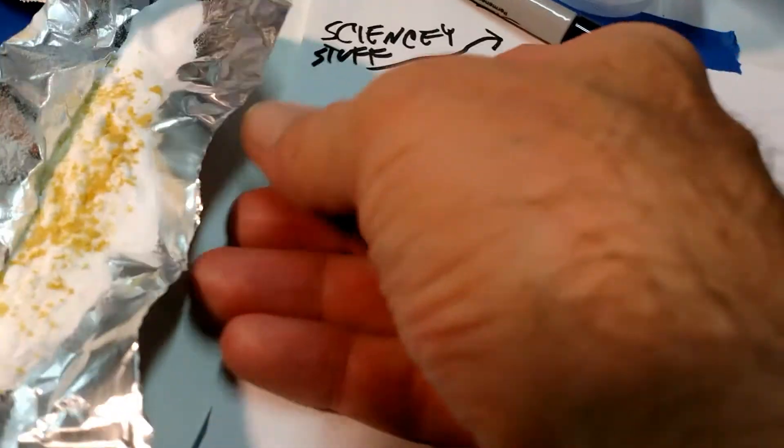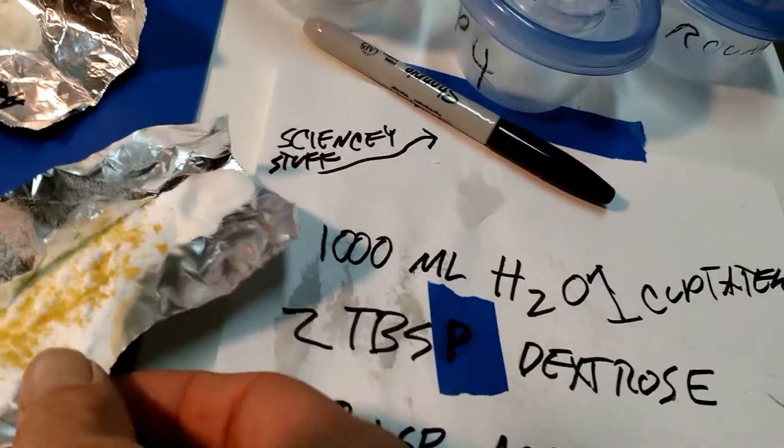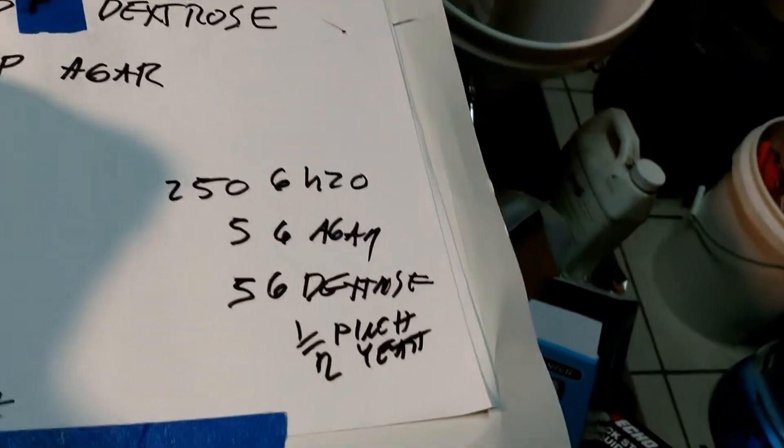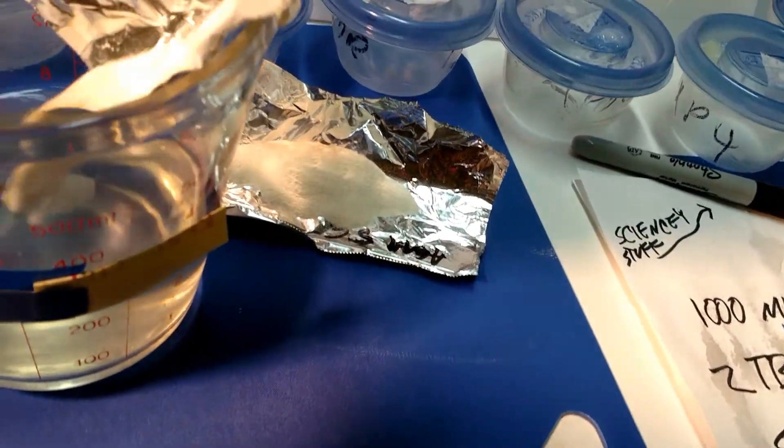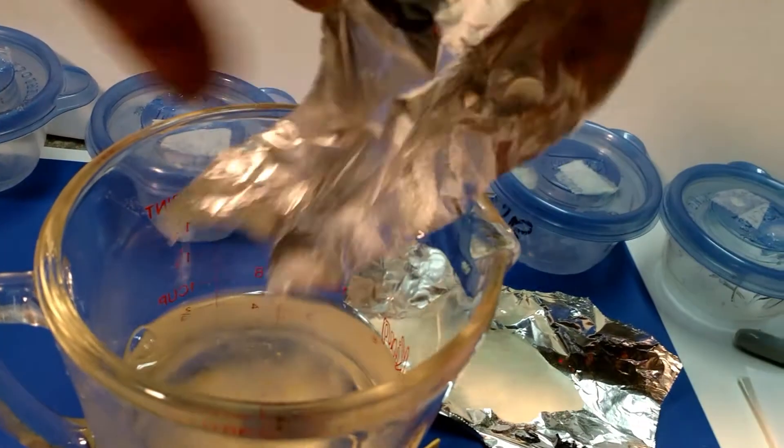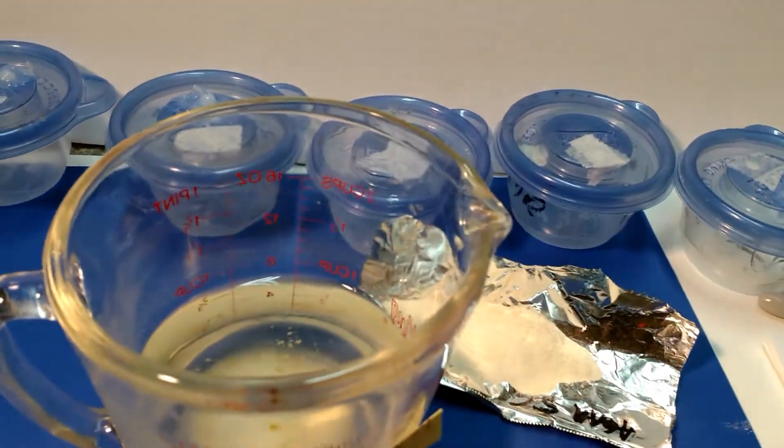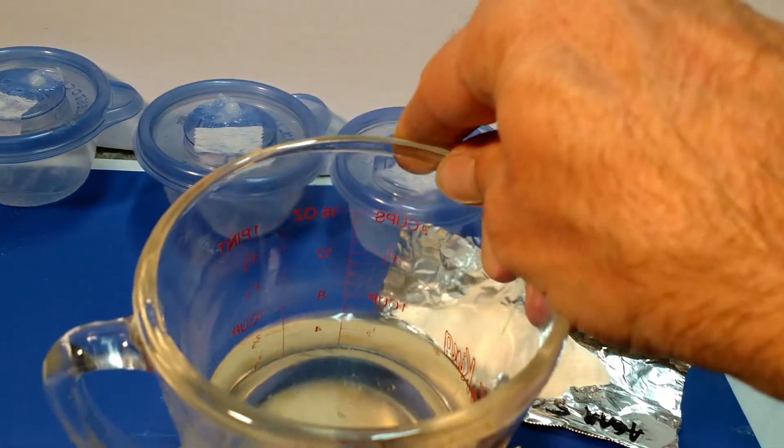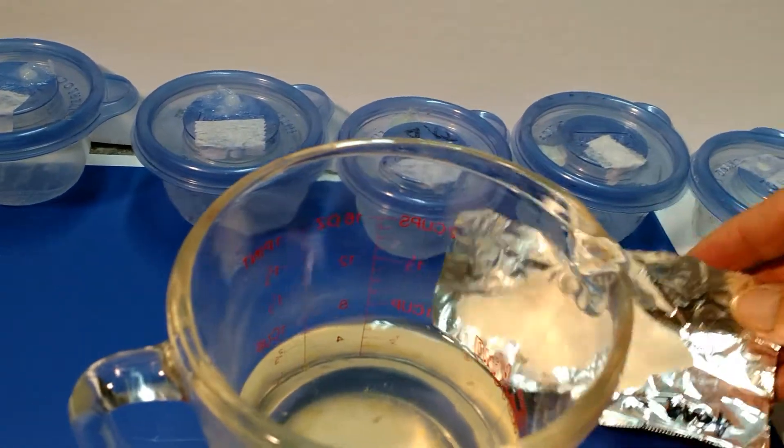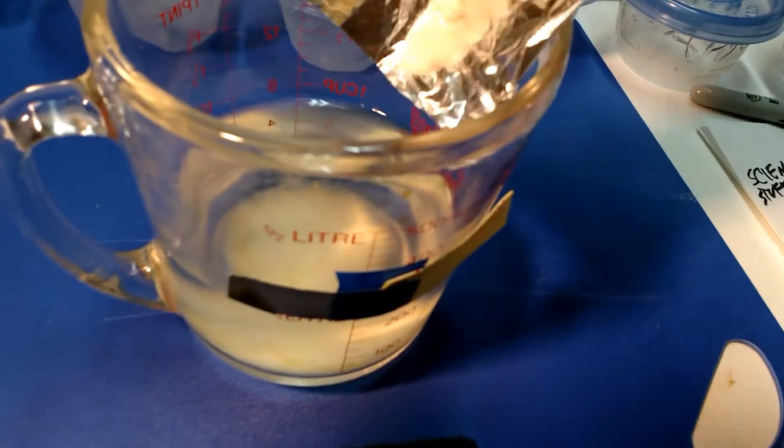Now for our other goodies: our 5 grams of dextrose and a little bitty tiny pinch of yeast is what we have going on right there. And then we have the agar.